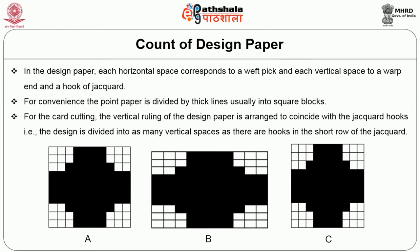To retain the correct proportion and shape of the figure, the number of vertical and horizontal spaces must be in the same proportion as the ends and picks per unit space of the finished cloth. The necessity to use proper ruled paper is illustrated using a small motif of a spot figure in figures 5.1a, b, and c. In figure a, the spot motif is repeated on an equal number of ends and picks. In figure b, the same spot motif is repeated with twice the number of ends compared to picks. In figure c, it is twice the number of picks compared to ends.